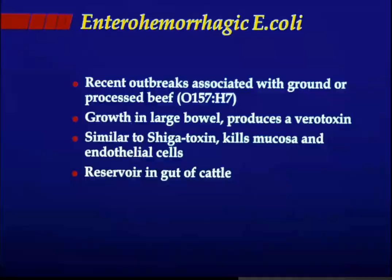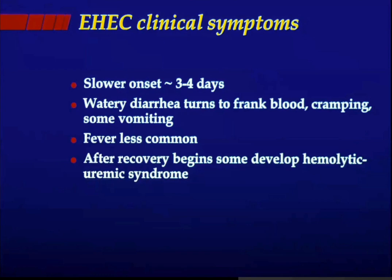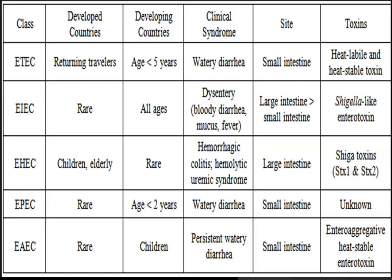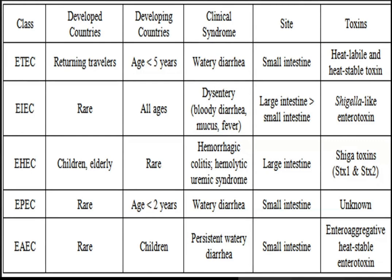Enterohemorrhagic E. coli produces a Shiga-like toxin — not just Shigella. Its reservoir is the gut of cattle. The diarrhea starts watery then becomes bloody, but fecal leukocytes are negative. Other E. coli types include enteroinvasive, which can also use Shiga toxin, enteropathogenic, and enteroaggregative. Some may need treatment, some may not. If treating, azithromycin for three days versus Cipro is usually the drug of choice.